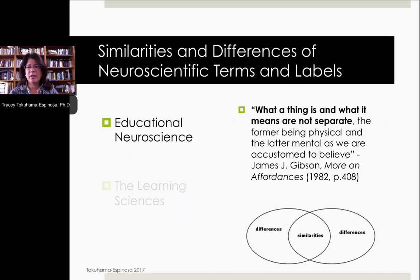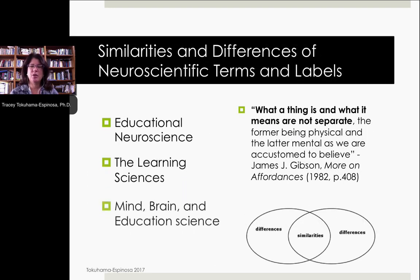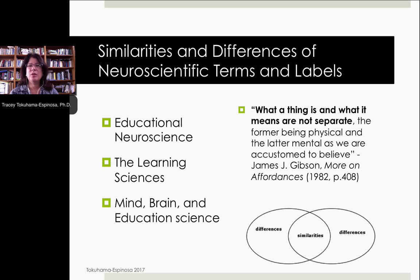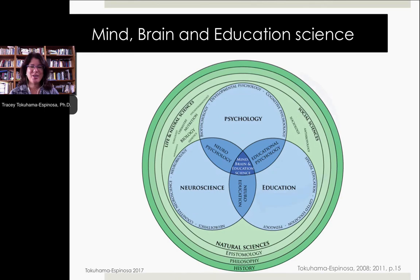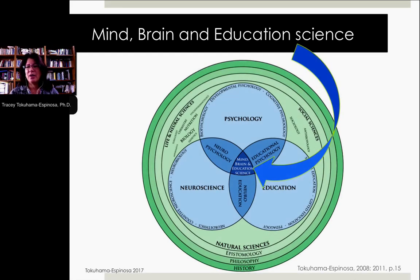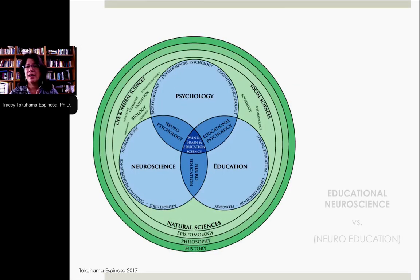Looking at what is similar and different about these three terms will help us determine exactly where the focus of each field is, and it also helps us interpret the information coming out of the journals produced by those different fields. Full disclosure: I am very partial to this sweet spot in the very center of mind, brain, and education science, but I do appreciate all of the information coming out of the learning sciences and educational neuroscience.